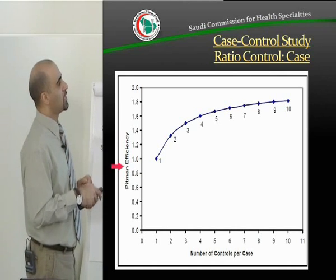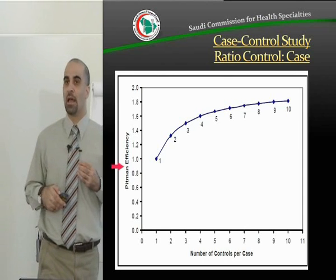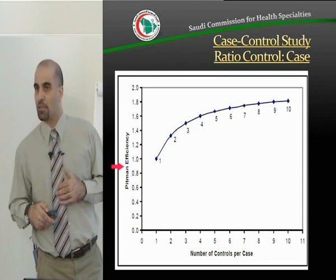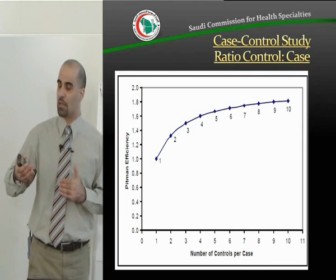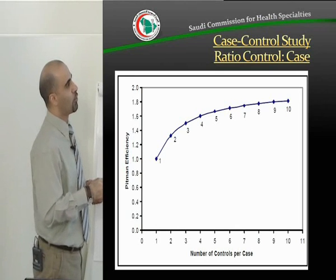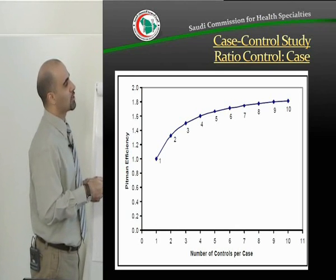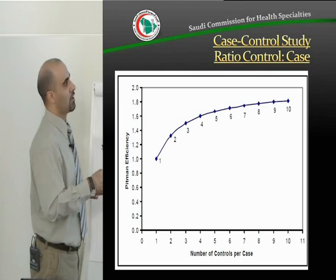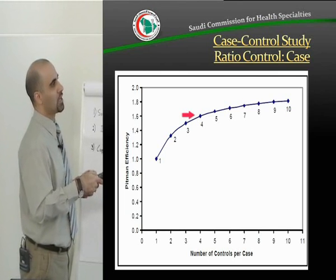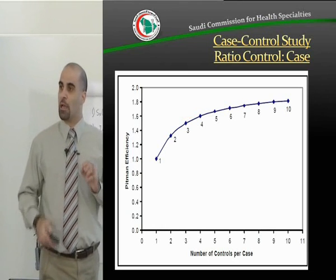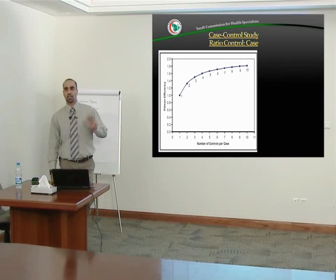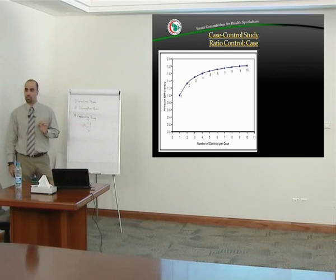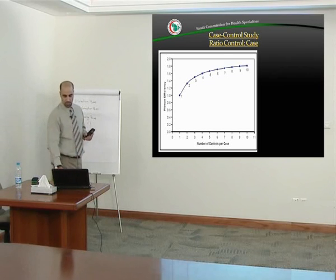This is called Pittman efficiency — a score reflecting the efficiency or power of the study. It has been shown that the more controls you take, the better the study is, up to four controls per case. After four, the benefit more or less plateaus. This is why most good case-control studies use four controls per case, and if you look at the literature, most good case-control studies follow this ratio.